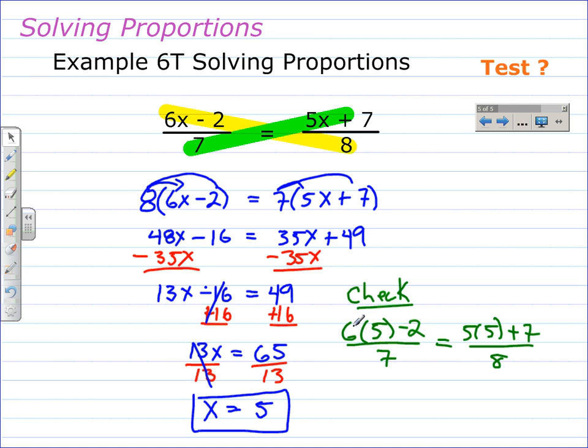And we need to simplify. I'll just verbally walk through the simplification. 6 times 5 is 30, 30 take away 2 is 28, and 28 divided by 7 is 4. On the right hand side, 5 times 5 is 25, 25 plus 7 is 32, and 32 divided by 8 is 4. So the solution does check.